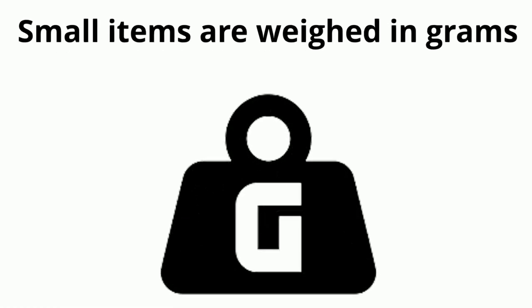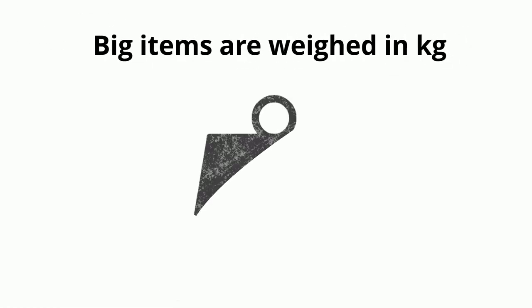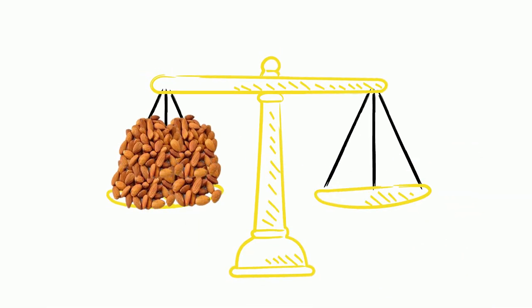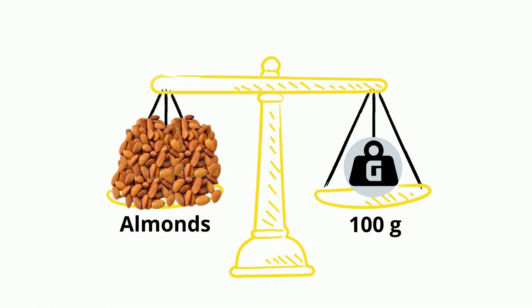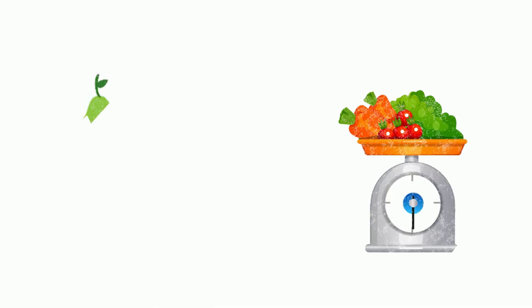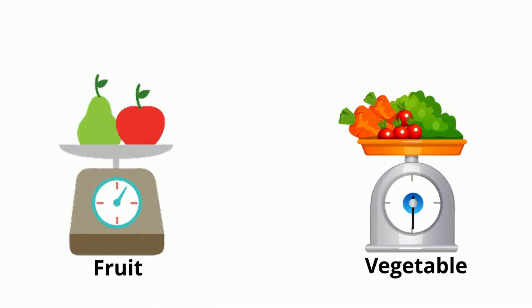Small items are weighed in grams and big items are weighed in kg. You may have seen vegetable and fruit sellers put the vegetable or fruit that is to be weighed in one pan of the weighing scale and some rock or piece of metal that is equal to one gram or kilogram. These rock and piece of metal are used to compare the weight of the object.